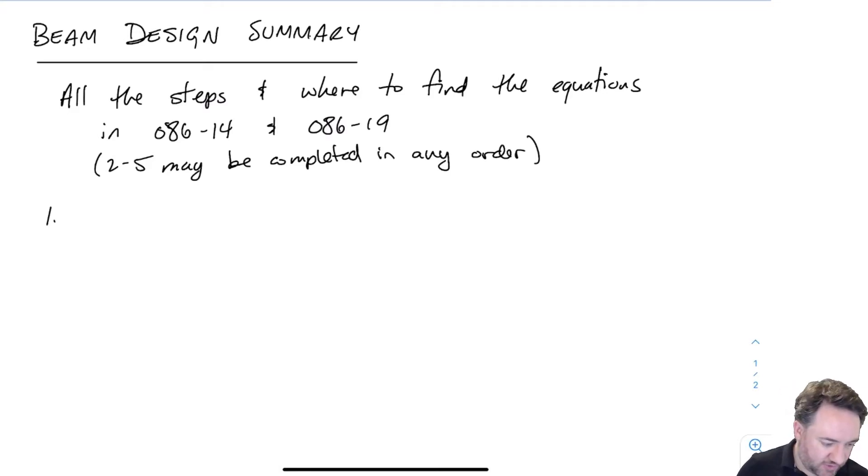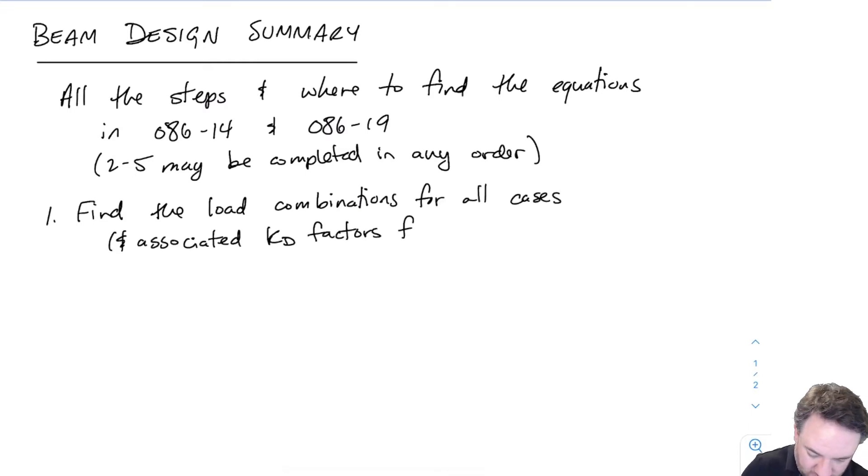So first let's talk about the load combinations. The first step is to find all of the load combinations for all of the different cases for all of the different types of load effects including factored moment, factored shear, potentially total load if required to calculate the shear resistance. That's the detailed shear method that we talked about and the load for bearing.